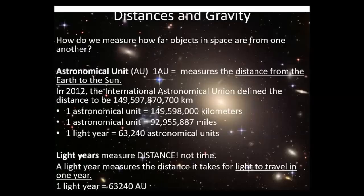The other one we're going to learn about is a light year, and that measures the distance it takes for light to travel in one year. One light year is equal to 63,240 AU.